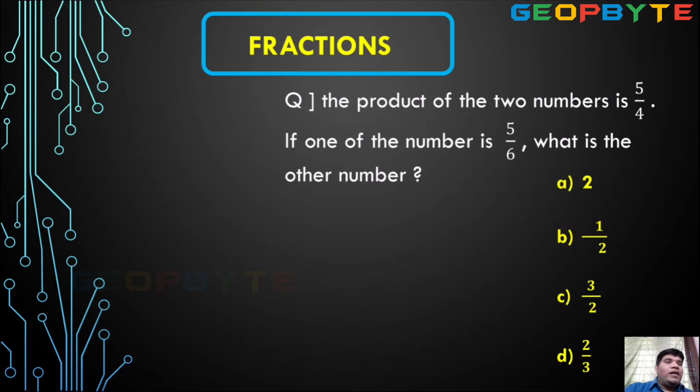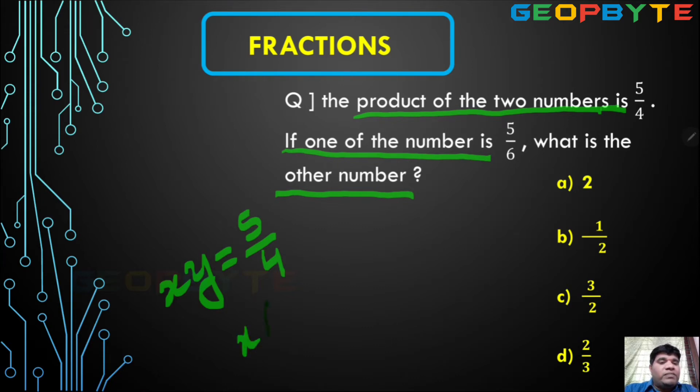Next. The product of the two numbers is 5 by 4. If one of the number is 5 by 6, what is the other number? The product of the two numbers. So one number I don't know. You take X and Y. Product is equal to how much they given? 5 by 4. One number is 5 by 6. So X, one number 5 by 6.